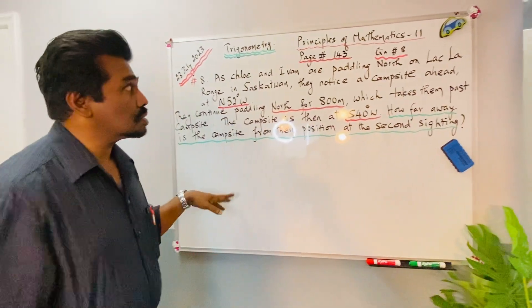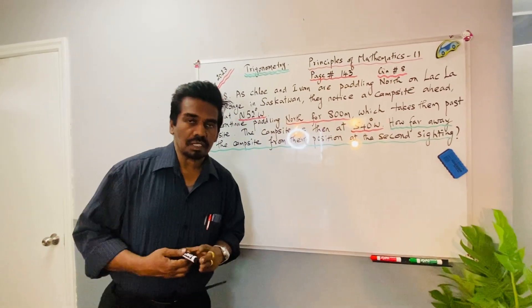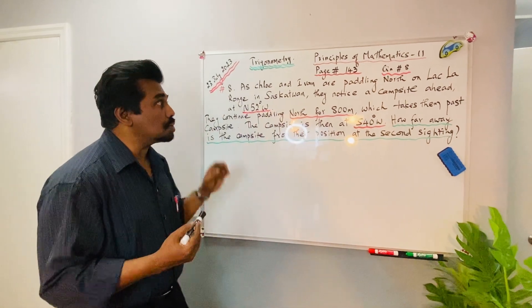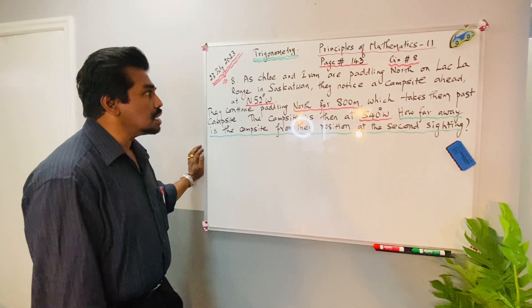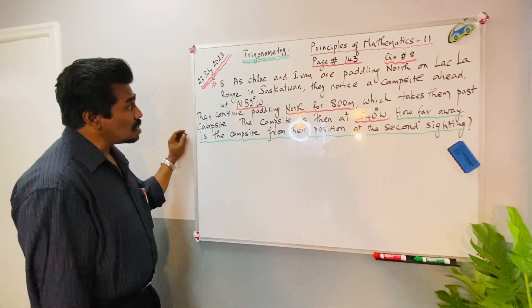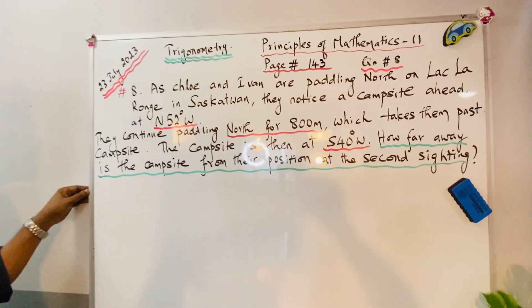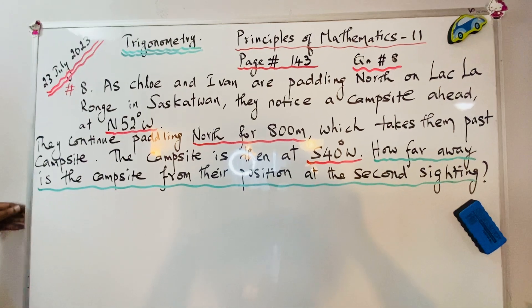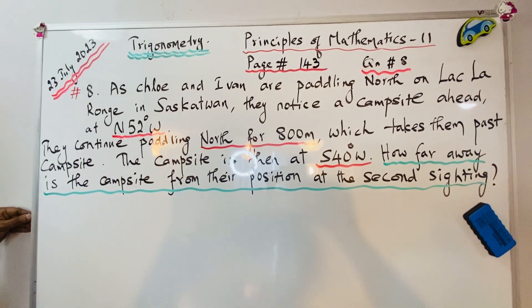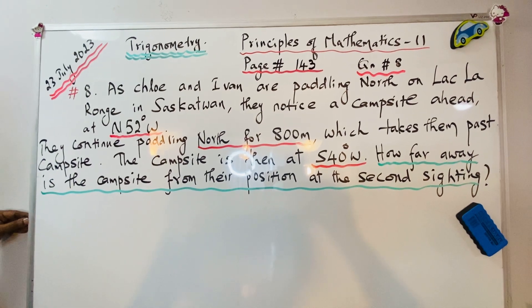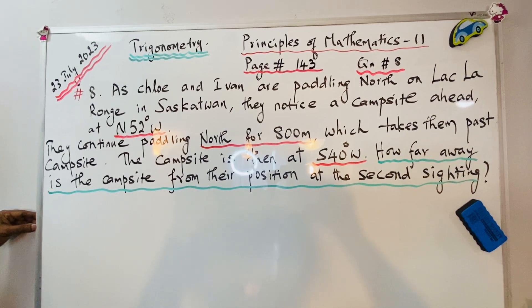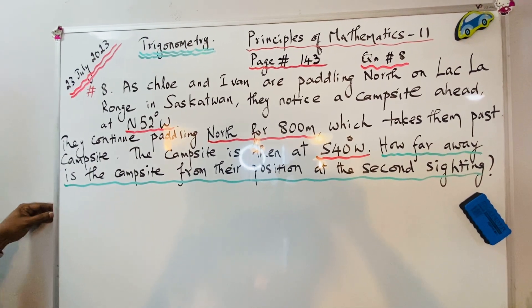Today we are going to see a trigonometry question taken from the Principles of Mathematics Level 2, page number 143, question number 8. Chloe and Ivan are paddling north on Lac La Ronge in Saskatchewan. They notice a campsite ahead at north 52 degrees west.